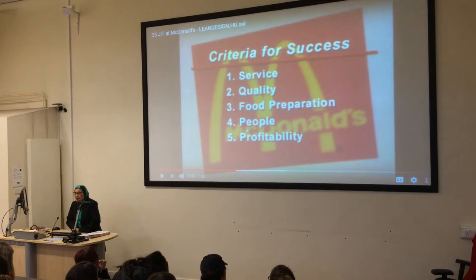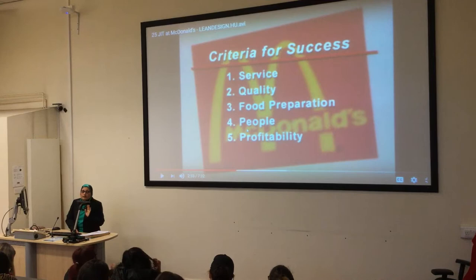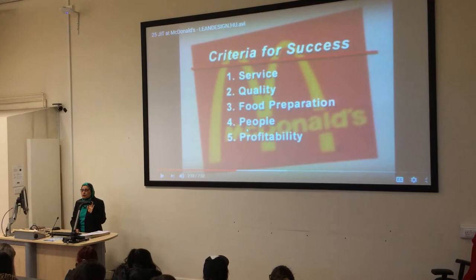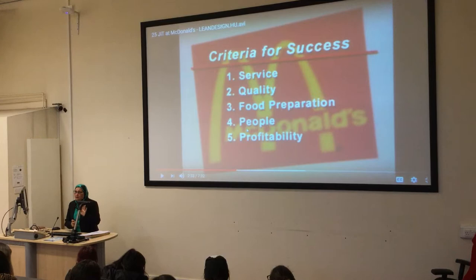The four main perspectives under the balanced scorecard are: employees, customers, internal processes, and financial. We also added the environmental perspective, because if you remember the lecture, I asked you where we are going to put the environmental perspective. So: people represents employees, profitability represents financial, food preparation and quality represent internal processes.